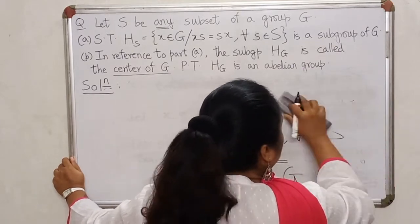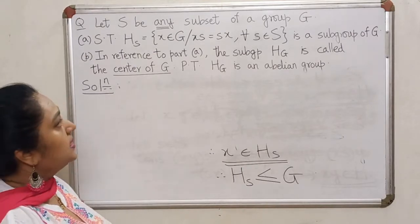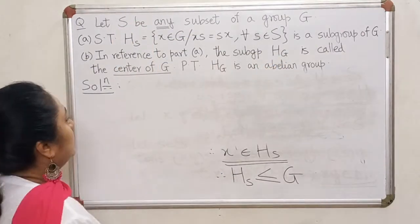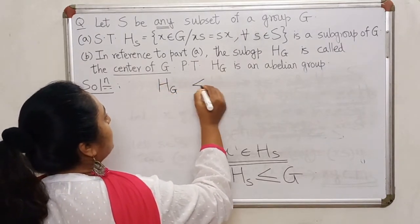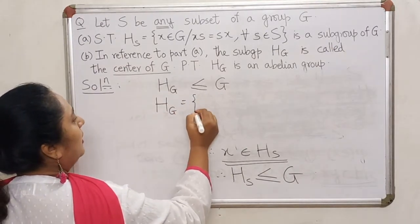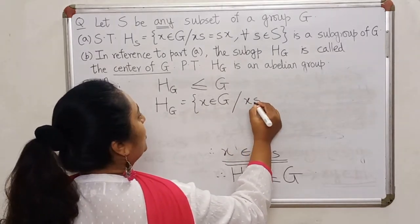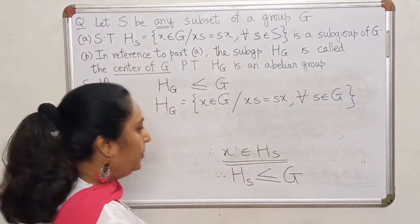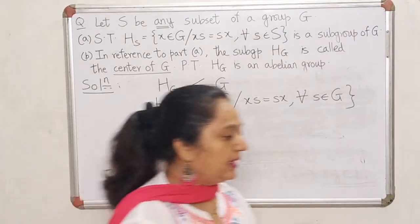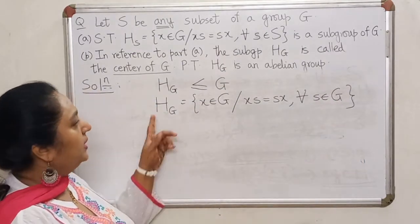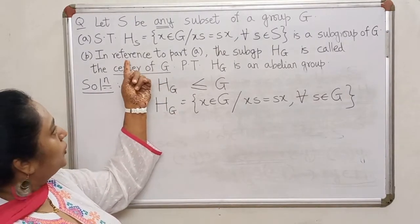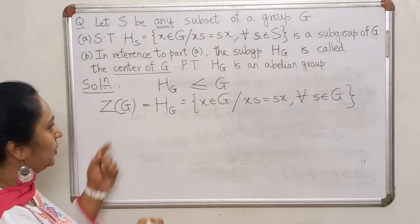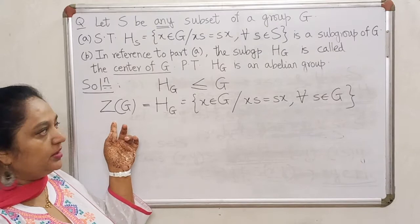Now let's come to part B. Since S is any subset, we can in particular take S equal to G. Then H_G will be a subgroup of G consisting of those elements of G which commute with all elements of the group. This is called the center of the group. We have already proved it is a subgroup. Most books use the notation Z(G) for the center of a group.